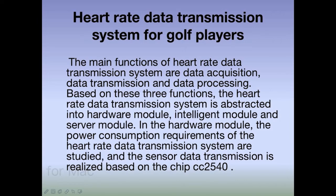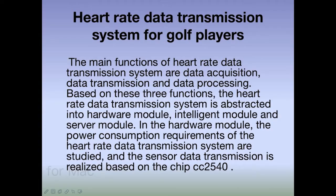The main functions of the heart rate data transmission system are data acquisition, data transmission, and data processing. Based on these three functions, the heart rate data transmission system is abstracted into a hardware layer, an intelligent layer, and a service layer. The sensor data transmission is analyzed based on the CC2540 chip.